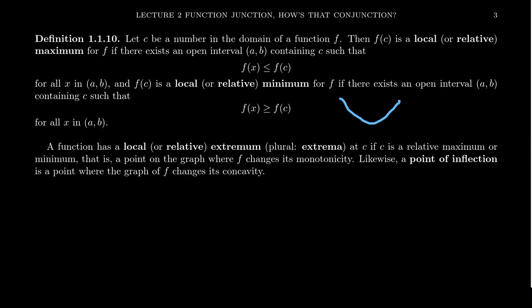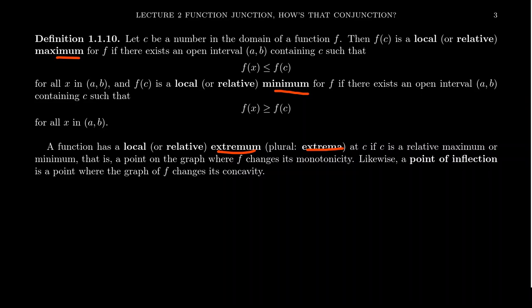We say that a point is a local extremum if it's either a maximum or a minimum. We can think of extremum as a neutral term, not specifying maximal or minimal. A bit of grammar worth mentioning: words like maximum, minimum, and extremum come from Latin. The proper plural forms are extrema, minima, and maxima — not maximums. Mums are flowers. Maxima is the proper one. Obviously no one's going to be taken away by the grammar police if you say it incorrectly, but just wanted to point that out.